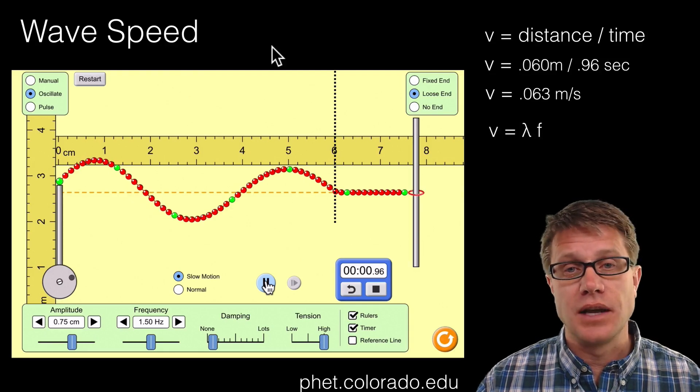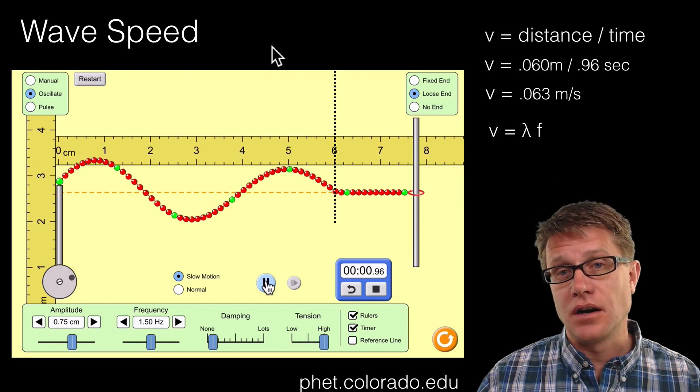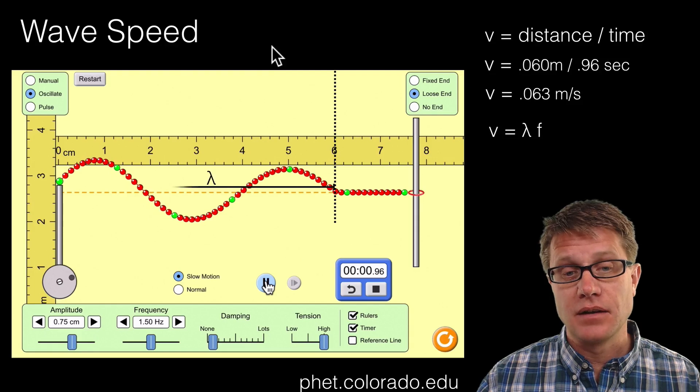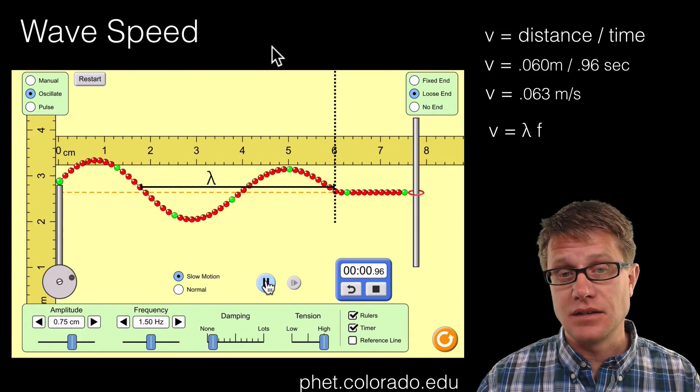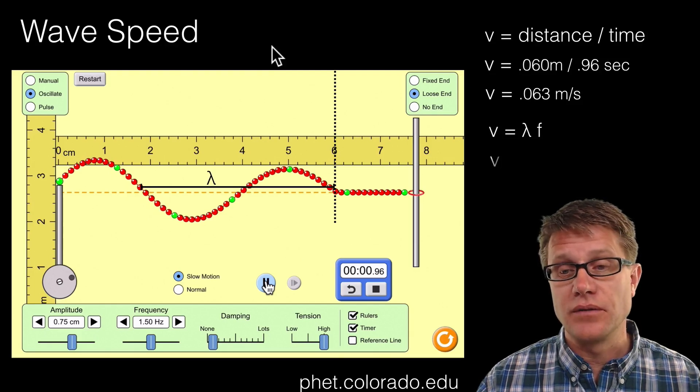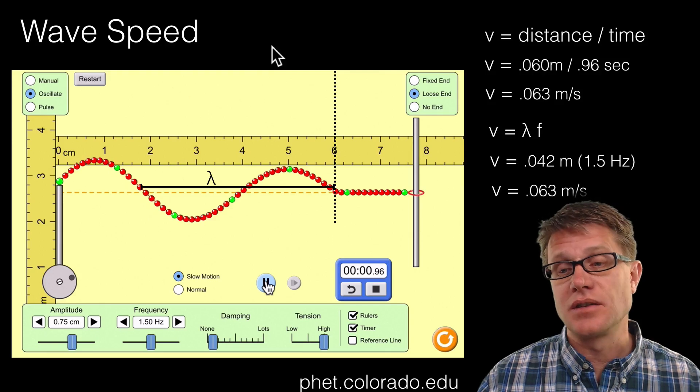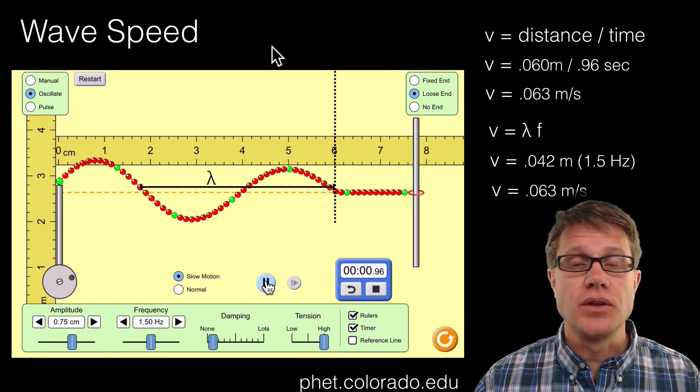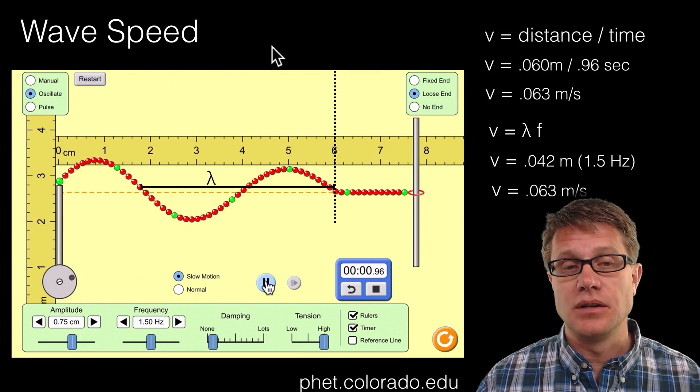But we could also use v equals lambda f. And so what is our lambda? What is our wavelength? It is going to be that distance. And what is our frequency? 1.5. And so we could say it is going to be the same value. And so those are two ways we could calculate the speed of the wave.